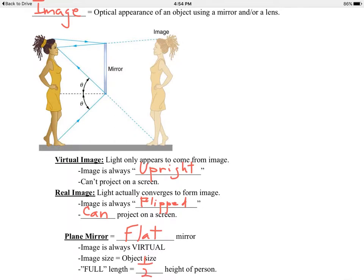Let me explain this with this diagram. Whenever you see something, you see it because there's light going into your eyes. Starting with this person's foot — light bounces off your foot and towards the mirror. One ray of light in particular bounces off that mirror following the law of reflection — the two angles are equal — and that ray of light goes into this person's eye. But your brain says that light travels in a straight line, so the brain says her foot is over there in the mirror. It's not really there, but your brain tells you it is.